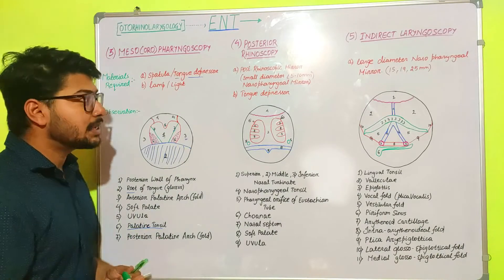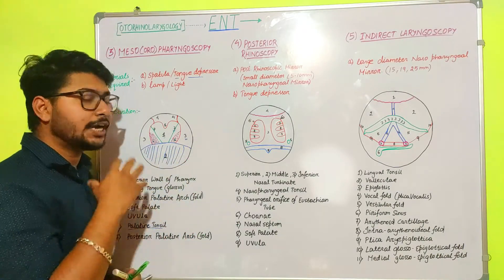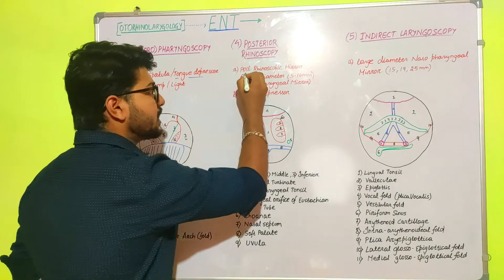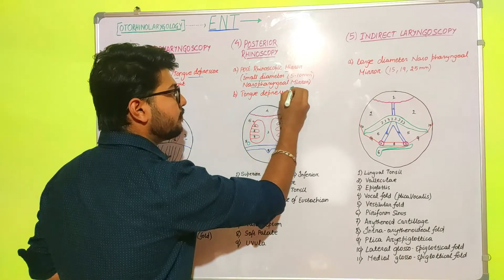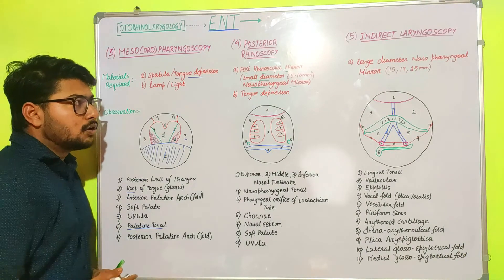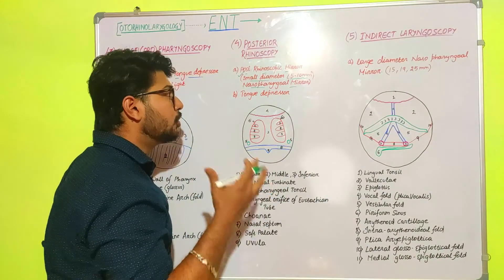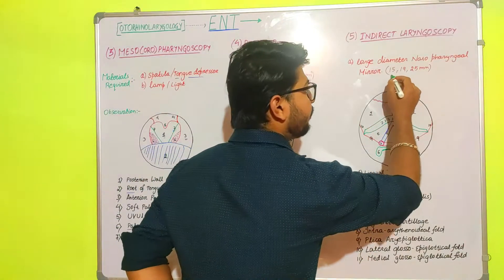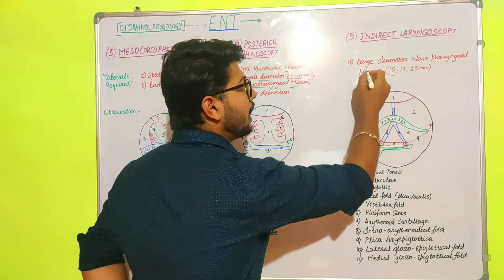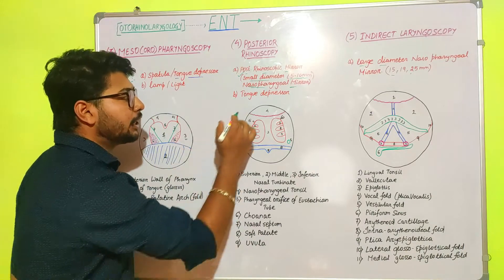Moving towards posterior rhinoscopy — it is a clinical examination for the nasopharynx, so we need to check the nasopharyngeal structure. The materials required include the posterior rhinoscopy mirror, otherwise known as the small diameter nasopharyngeal mirror or Sinclair Thompson mirror. This mirror has a small diameter of around 5 to 10 millimeters. A larger diameter mirror of 15 to 19 or 25 millimeters is used for indirect laryngoscopy. We also need the tongue depressor.